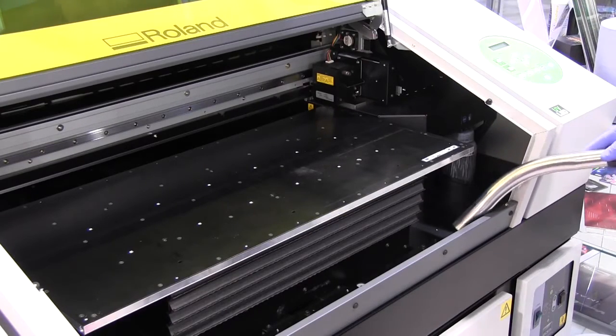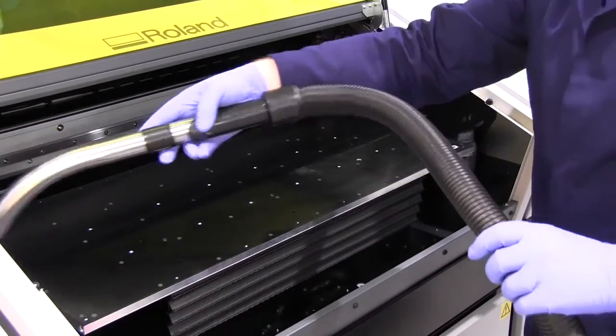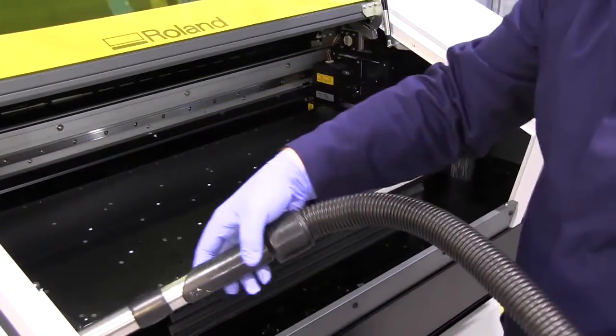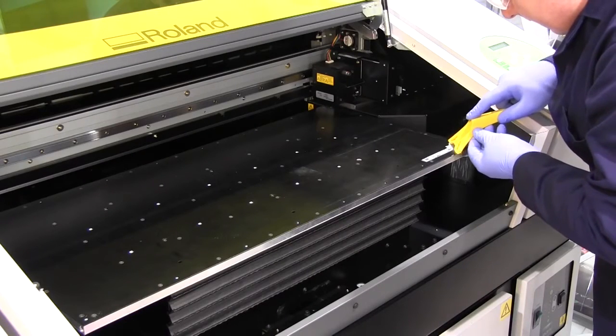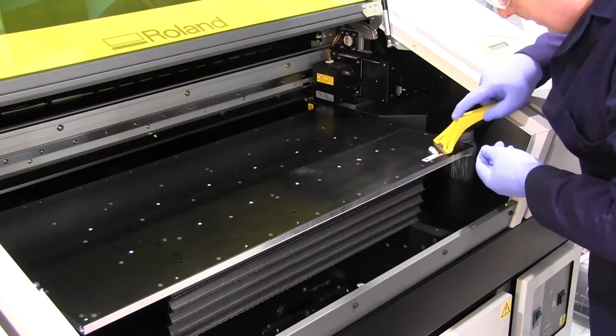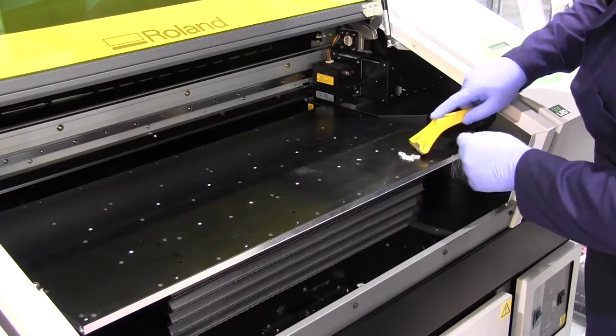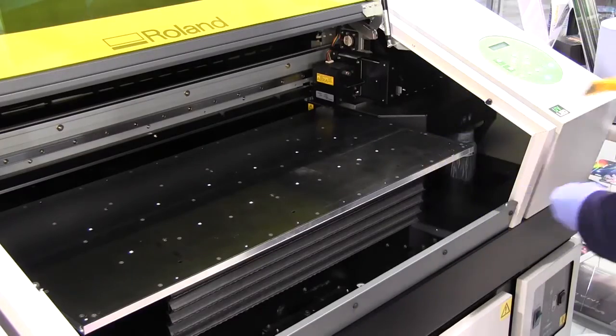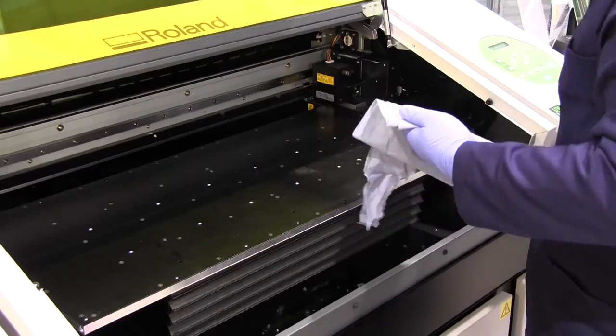Next we are going to need to clean all of the surfaces within the device. For this you could use a vacuum or a tack cloth that will help to pick up any settled dust or loose particles. Here you can see we are using a scraper to remove any print or ink on the table. Then we're going to use some isopropanol to clean the surface.